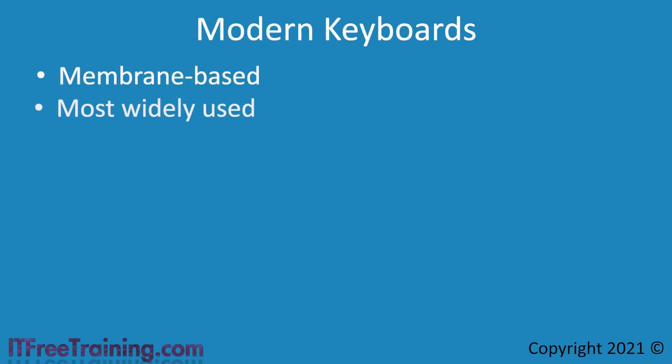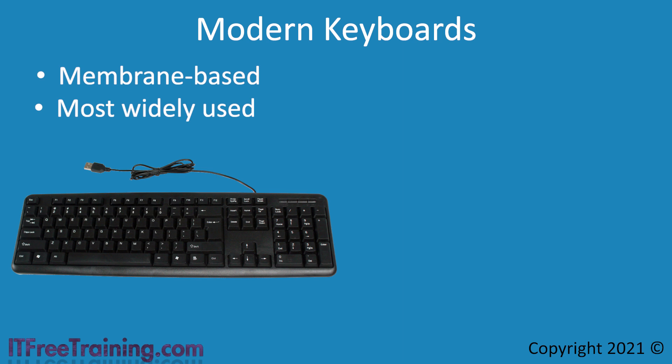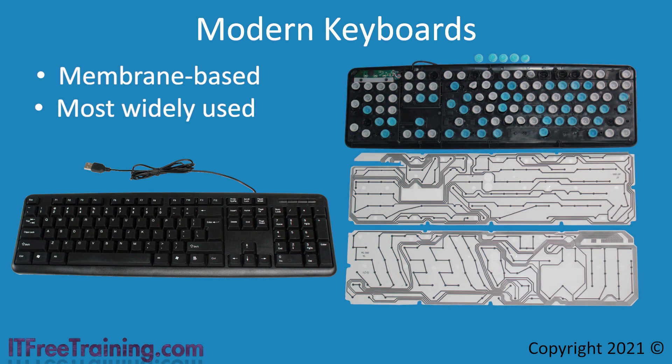The most widely used keyboard on the market is a membrane-based keyboard combined with a plastic case. These keyboards are cheap to make. Inside this keyboard, you can see that under each key is some rubber. When a key is pressed, the rubber pushes down onto a contact layer, creating a circuit which allows the keyboard to detect a key has been pressed. In this example, each key has its own separate piece of rubber, though in most cases the keyboard will have one rubber sheet that fits under the whole keyboard. These keyboards provide more tactile feedback than a pure membrane keyboard — there is a little more bounce in the keys, which makes them easier to type on. This low cost and ease of use makes them the most commonly used keyboard on the market.